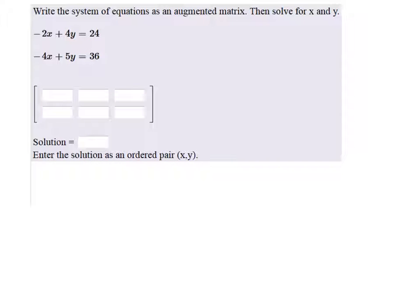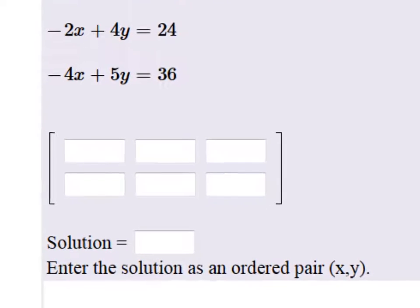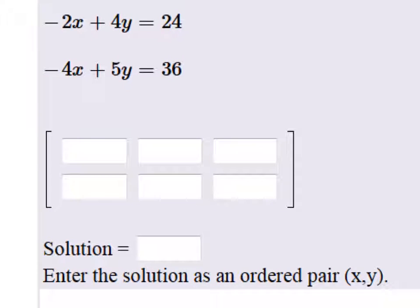So first, let's go ahead and change this into an augmented matrix. I'll zoom in so we can put those numbers in. Our coefficient of this x is negative 2, the coefficient of y is 4, the answer is 24. The next row, we've got negative 4, 5, and 36.